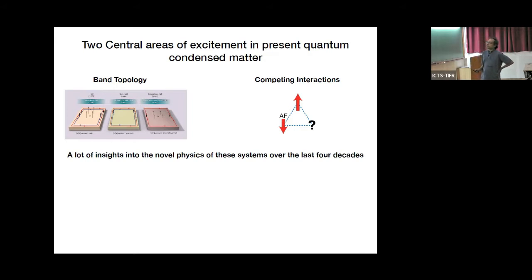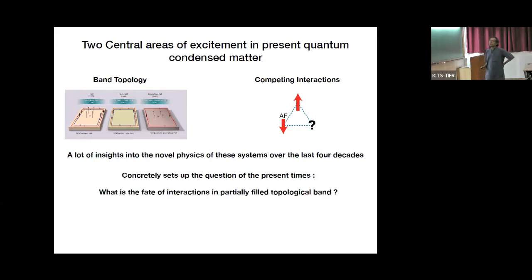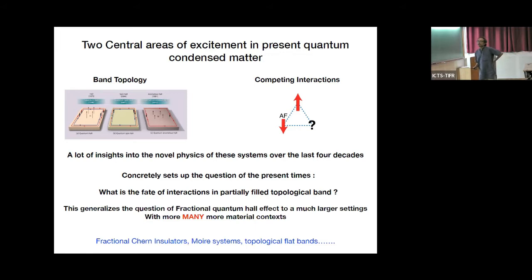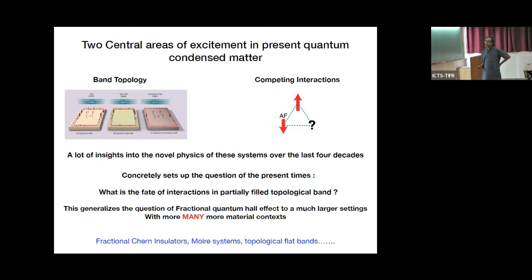Over the last four decades we have developed lots of insights into band topology and into novel phases that stabilize in the presence of competing interactions. This concretely sets up the central question of our time: what is the fate of interactions in partially filled topological bands? This generalizes the question of the fractional quantum Hall effect to a much larger setting with many more material contexts — fractional Chern insulators, various moiré systems, topological flat bands — as heard at this meeting and at the APS meeting in Chicago.